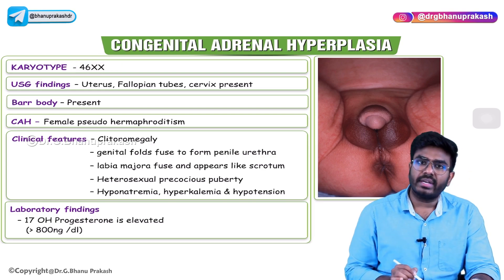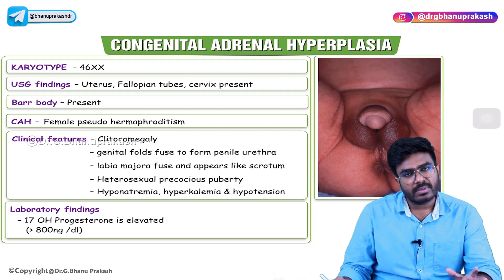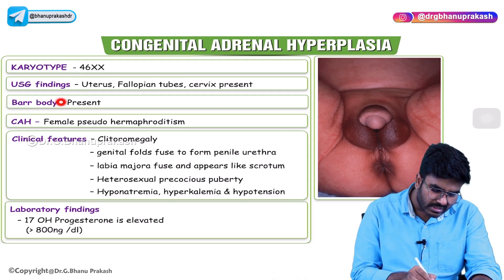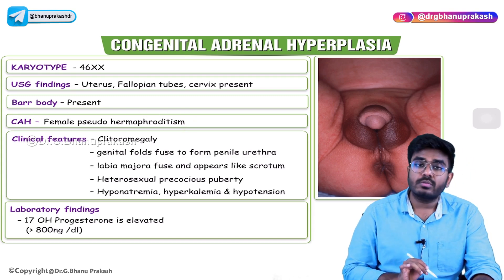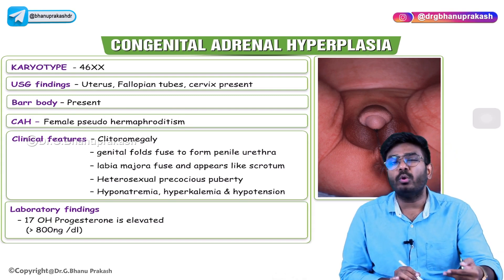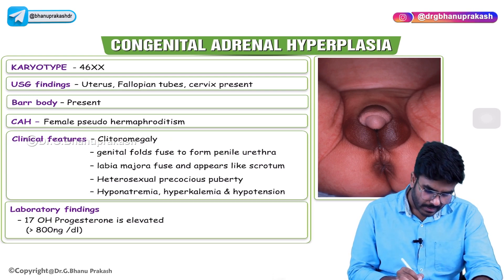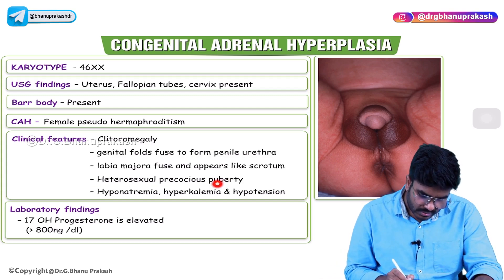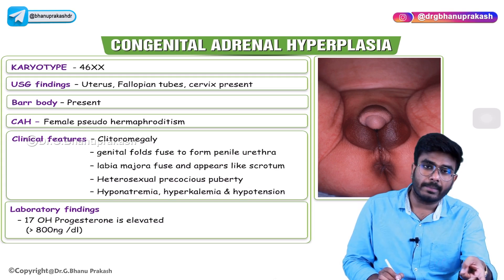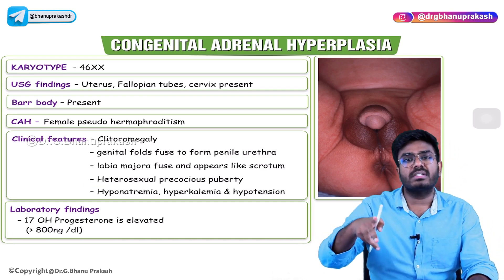The karyotype is 46XX — it is a female. On ultrasonographic findings, you can see a uterus, fallopian tubes, and cervix all present in the abdomen of this baby. When you look for the Barr body, it is also present because she is female — in females, due to the process of lyonization, the Barr body is formed. So congenital adrenal hyperplasia is the most common cause of female pseudohermaphroditism: genetically female but phenotypically looking like a male. Clinically, there is clitoromegaly, the genital folds fuse to form a penile urethra, the labia majora fuse looking like a scrotum, and there is heterosexual precocious puberty — the female is looking like a male due to excessive androgens.